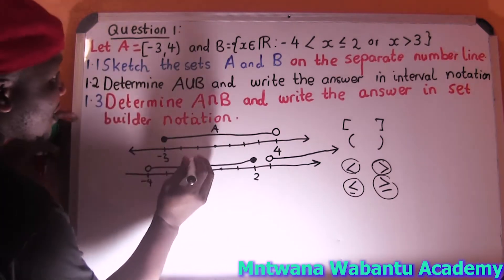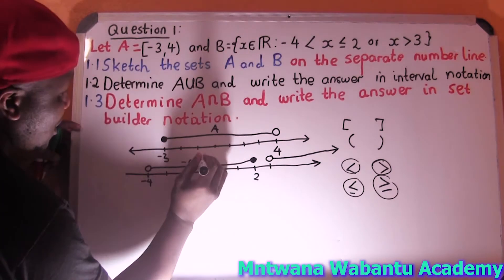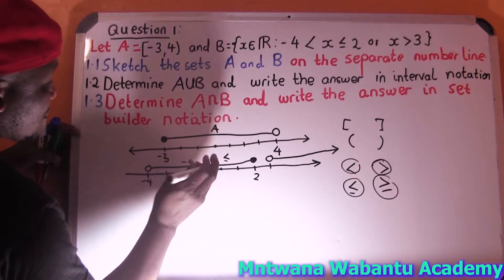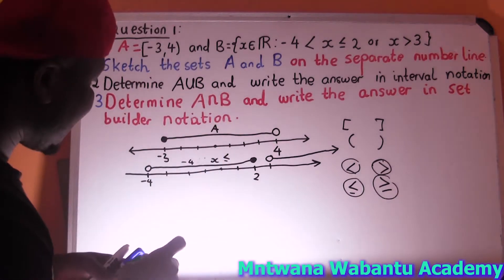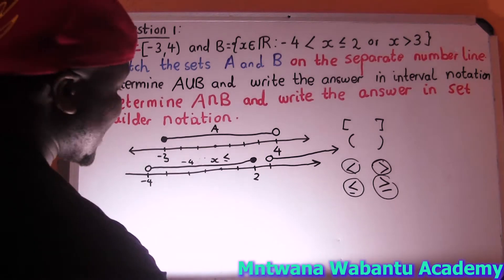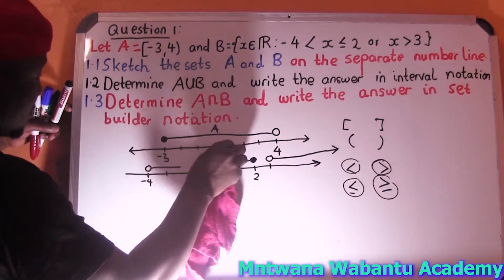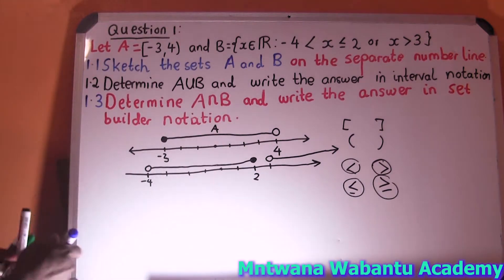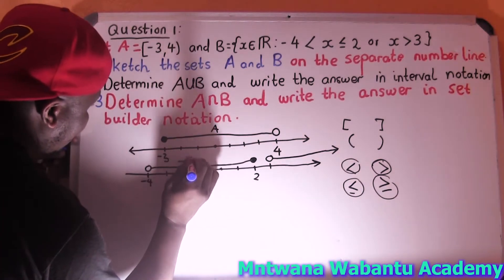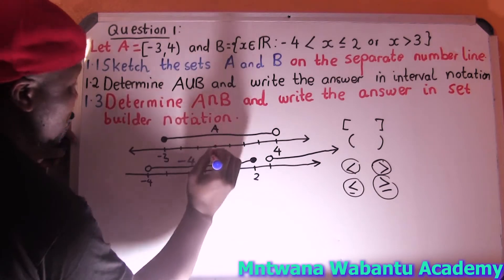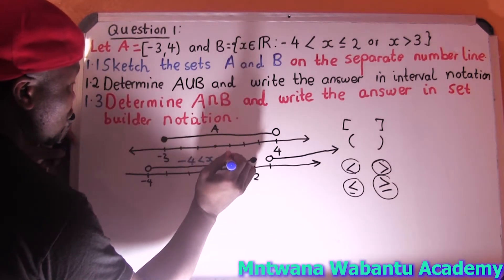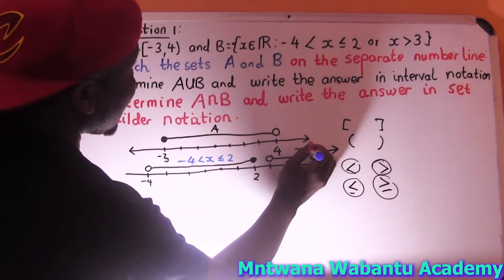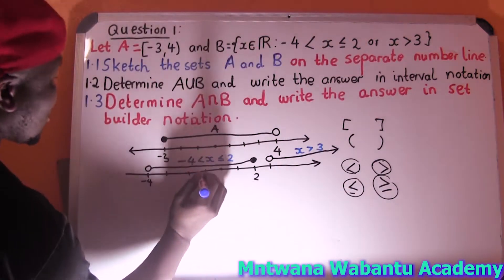To summarize Set B on the number line: one part starts from negative 4 excluding all the way to 2, and the other part starts from 3 — excluding — going to positive infinity. All these parts together give us Set B.